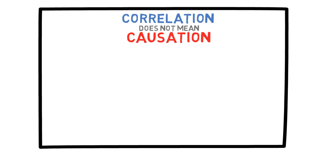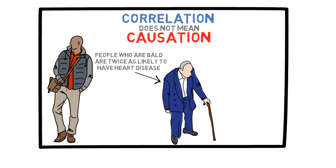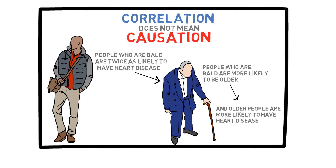I want to end this video by mentioning a concept you might have heard before: correlation does not mean causation. For example, suppose a study finds that people who are bald are twice as likely to have heart disease compared to people who are not bald. If your probability of having heart disease is x when not bald, then it becomes 2x when bald. You might conclude that being bald causes heart disease — but this is not necessarily true. A very easy explanation is that people who are bald are more likely to be older, and if you are older, you are more likely to have heart disease. Although baldness and heart disease have a correlation, it does not mean one causes the other; both are most likely a side effect of getting older.